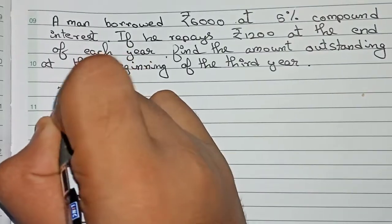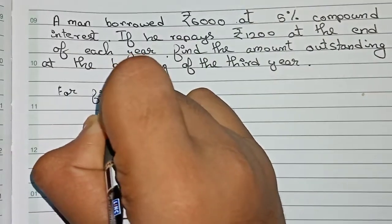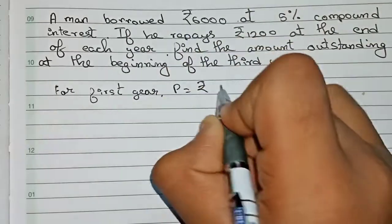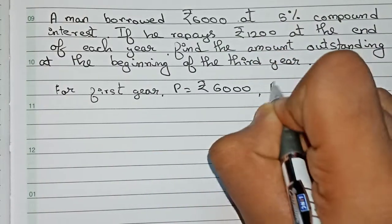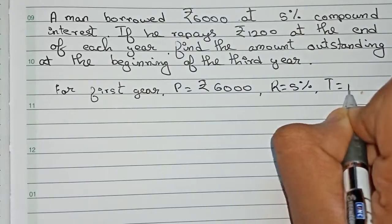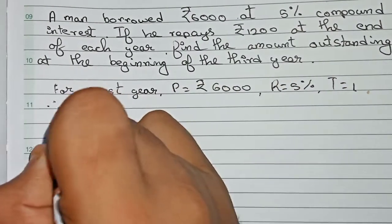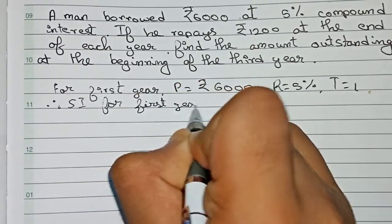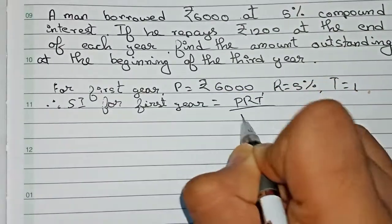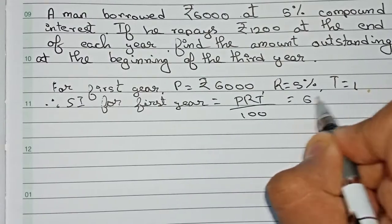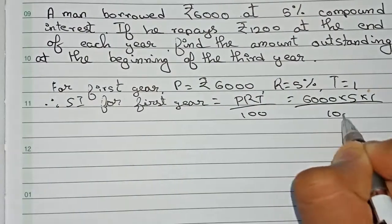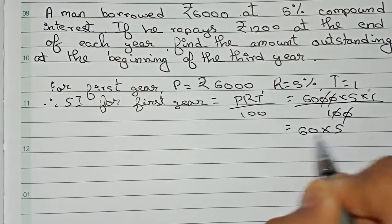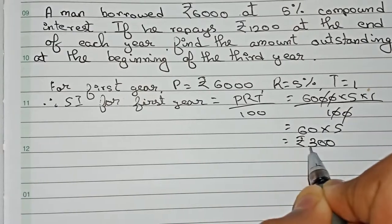For the first year, the principal is rupees 6000, rate is 5% per annum, and time is 1 year. So the SI for the first year using the formula P × R × T / 100: putting the values, 6000 × 5 × 1 / 100. Cancelling the zeros, we get 60 × 5, which is rupees 300. This is the interest for the first year.